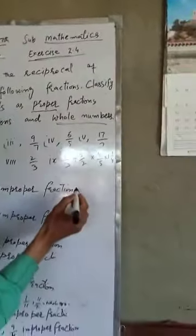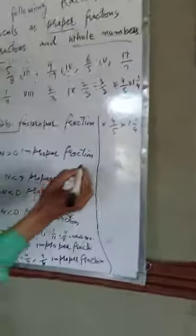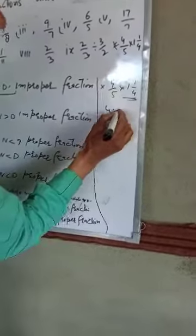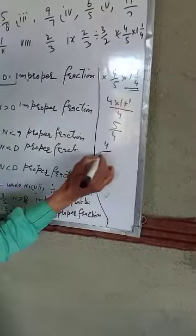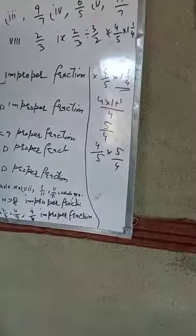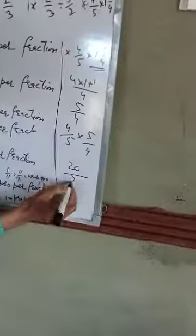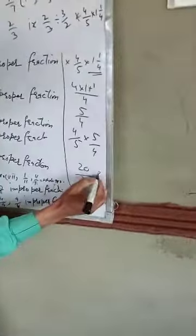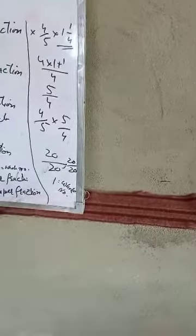Part number 10: four and one-fifth. Converting: 4 multiplied by 5 plus 1 gives us 21, so the fraction is 21 by 5. Its reciprocal is 5 by 21. Since 20 by 20 equals 1, this reciprocal results in a whole number. So this is a whole number.